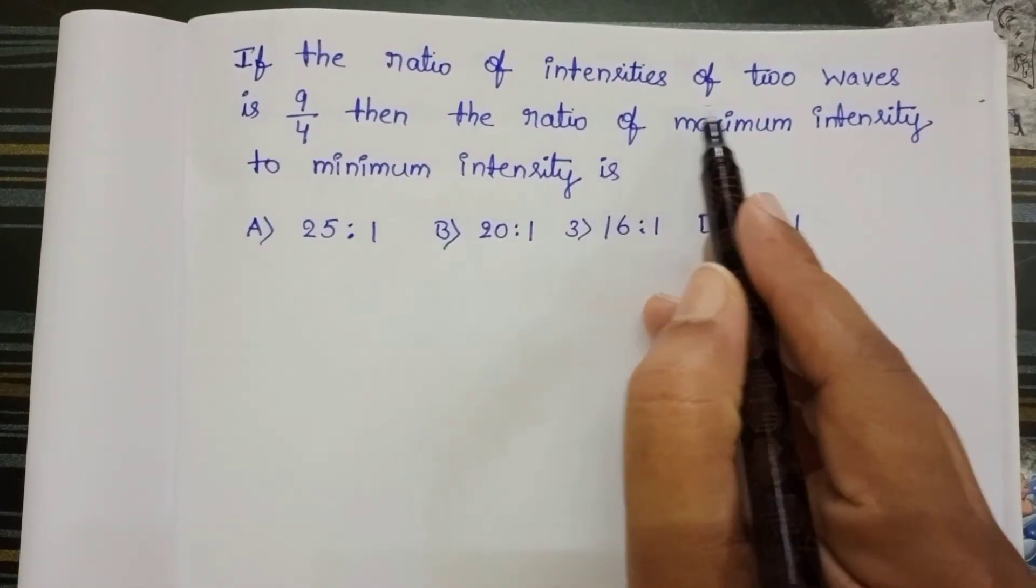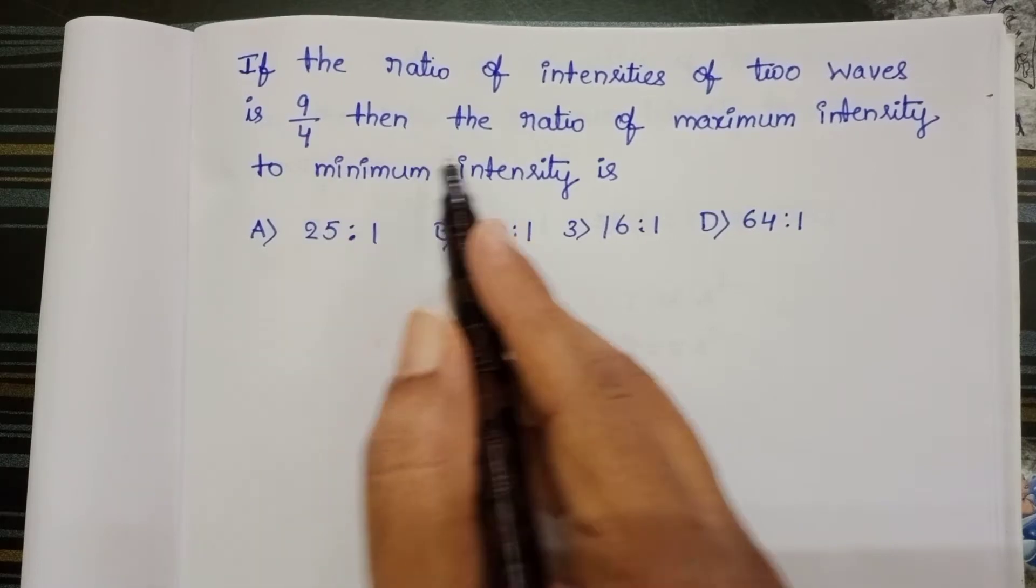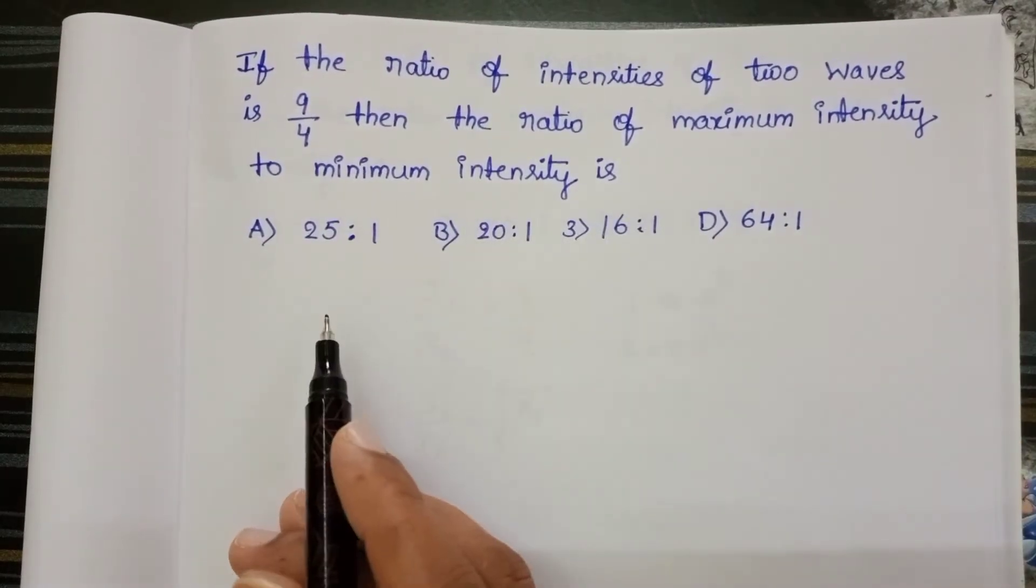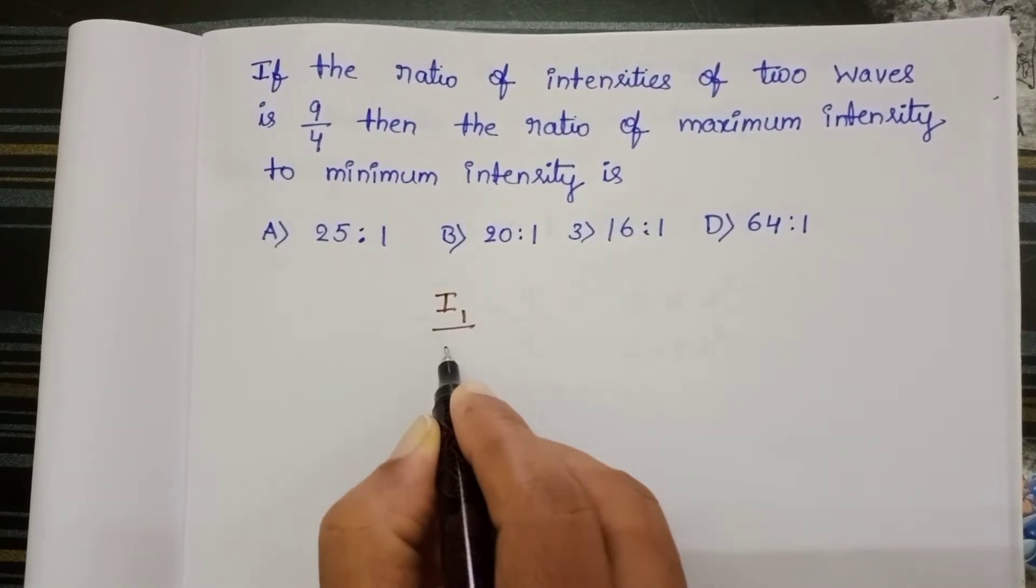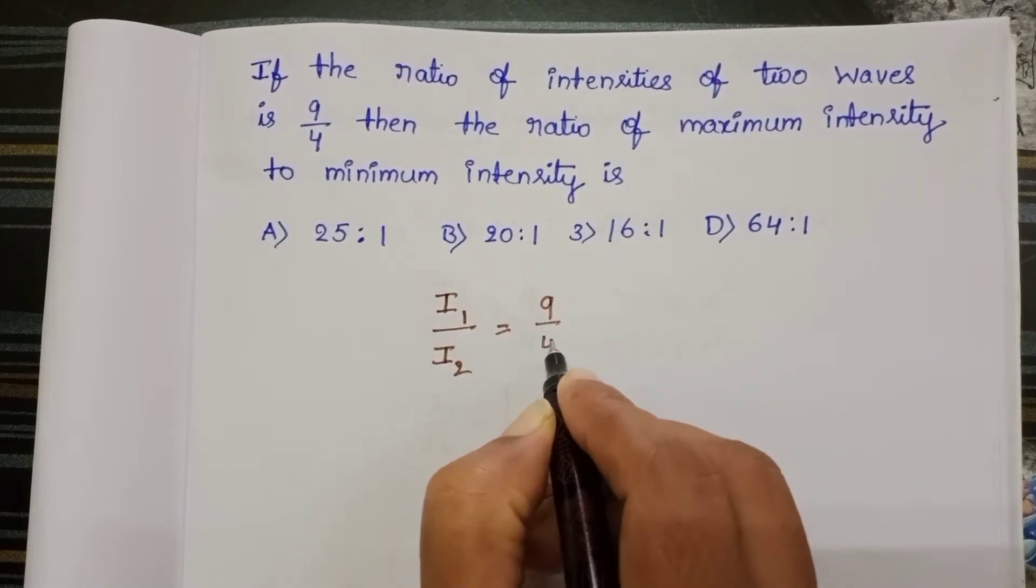If the ratio of intensities of two waves is 9 by 4, then the ratio of maximum intensity to minimum intensity is. Given ratio of intensities I1 by I2 equals 9 by 4.